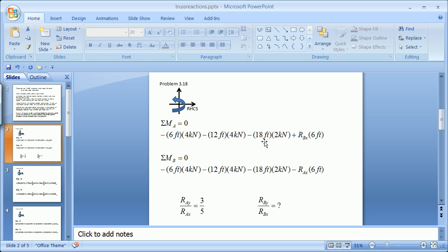In problem 3.18, you realize because of the geometry at point A, you have a knowledge of the reaction at A in the y to the reaction at A in the x. In fact, at least it's three-fifths in all reality.